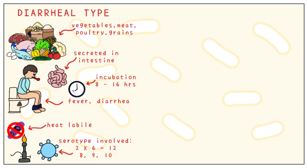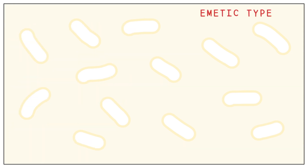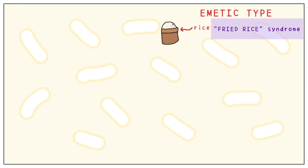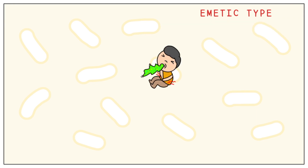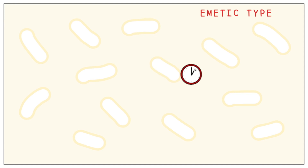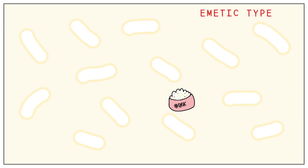The emetic type is found specifically in rice. That is why it is commonly called the fried rice syndrome. Like the name suggests, it causes vomiting and abdominal cramps, occasionally accompanied by nausea. It has a very short incubation period of 1 to 5 hours, which means you will likely be sick before you've even reached home.